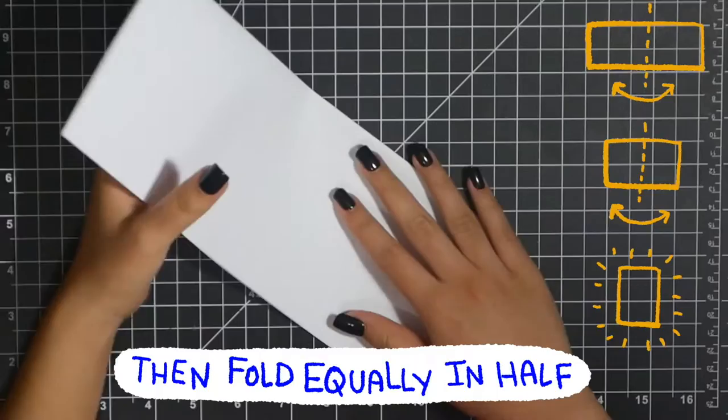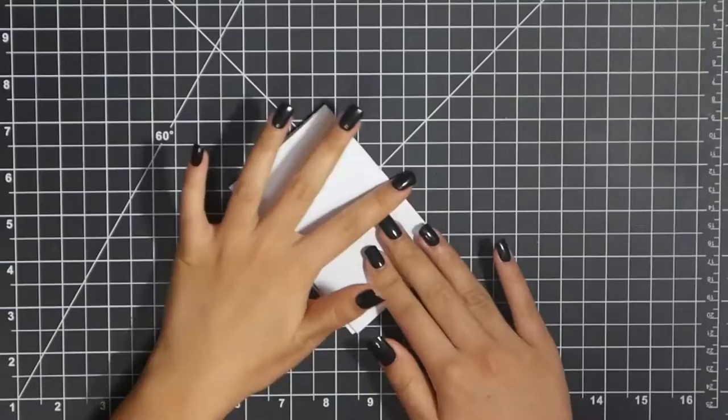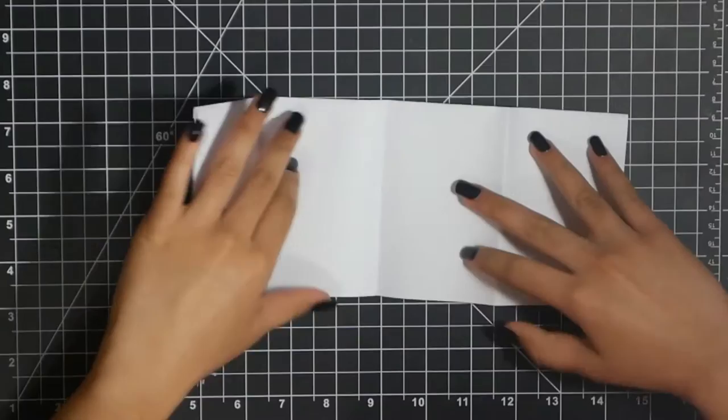Then you are going to fold it in half, and then in half again. It should look a little something like this, but now you are going to unfold it so that it looks like this.